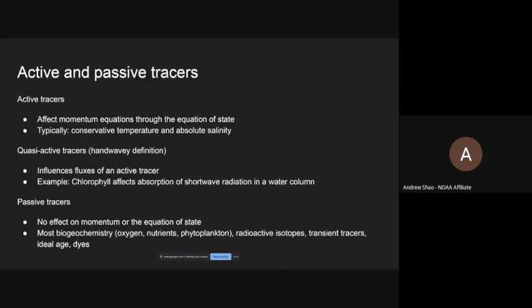I just want to go through quickly what tracers are, especially because it's supposed to be a seminar, and to define some terms so we can all understand and talk from the same point of reference. In general, we talk about active and passive tracers. The active tracers are the ones that directly affect the momentum equations through the equation of state. If you look at the primitive equations, one of the fundamental equations is the equation of state — the density of water being dependent on temperature, salinity, and pressure. Temperature and salinity are both tracers; they flow with the water.